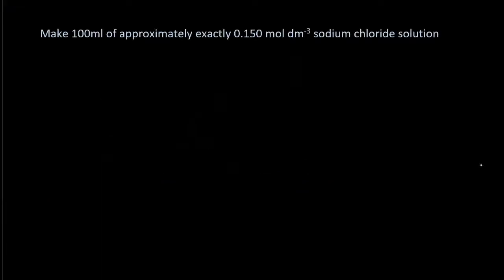Make 100 millilitres of approximately exactly — we'll find out what that means at the end of the video — 0.15 moles per decimetre cubed of sodium chloride.